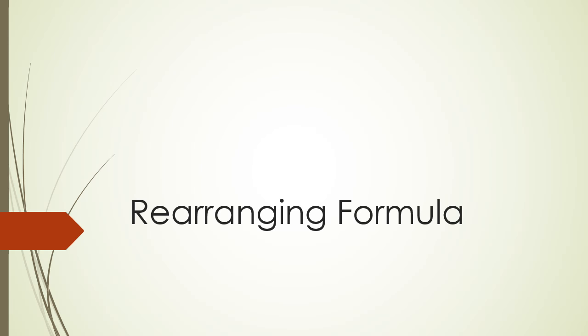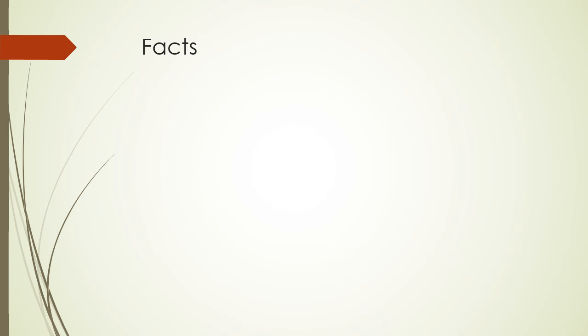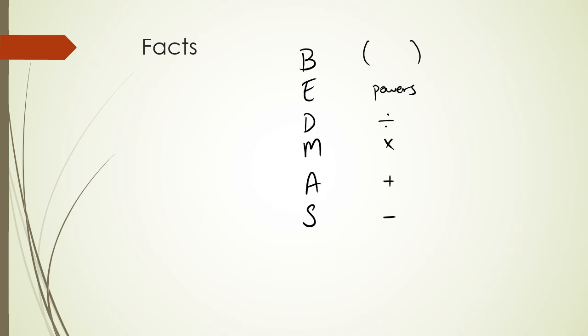In this session we're going to be looking at rearranging formulas. Just a recap from priority of operations — BEDMAS — where you have brackets, exponents or powers, division, multiplication, addition, and subtraction. This is useful to remember for rearranging because with rearranging equations we're trying to work backwards.